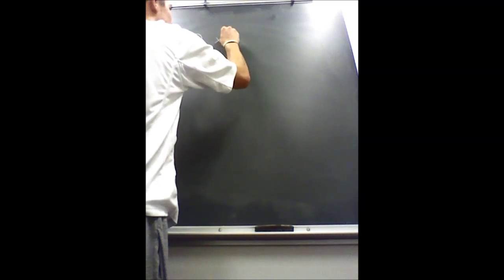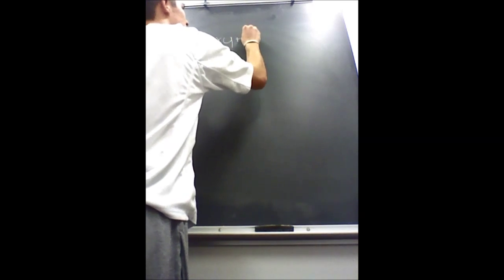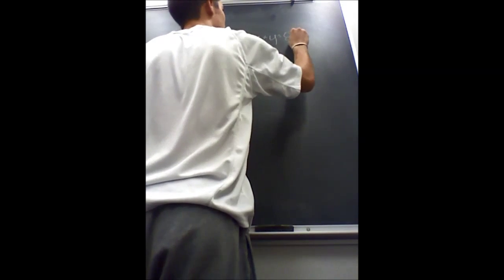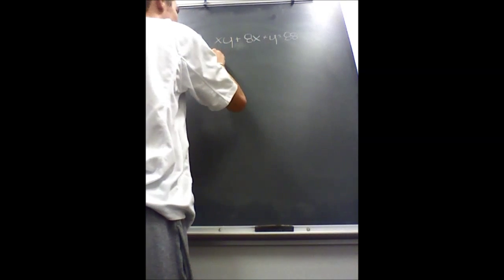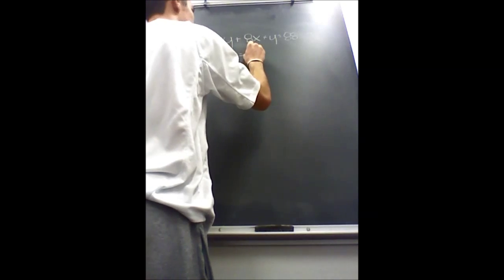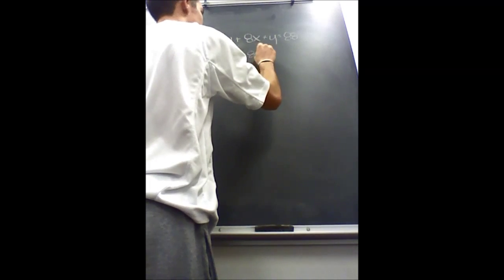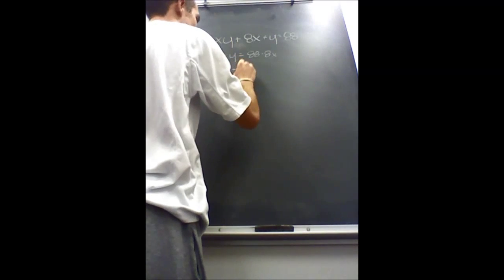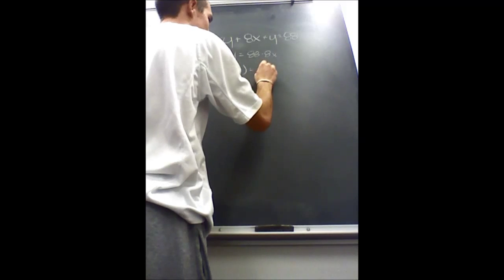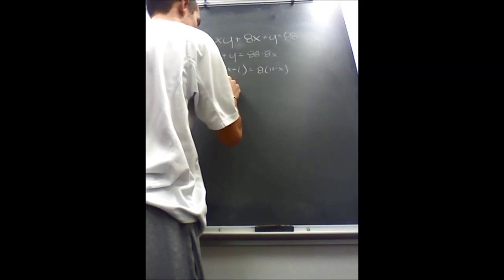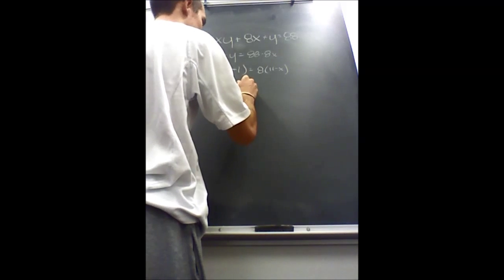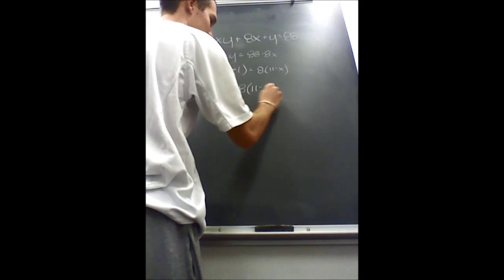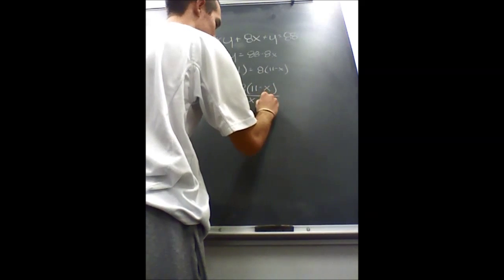First I wrote the equation. Now I'm going to solve for y. So you get y equals 8 times the quantity 11 minus x divided by x plus 1.